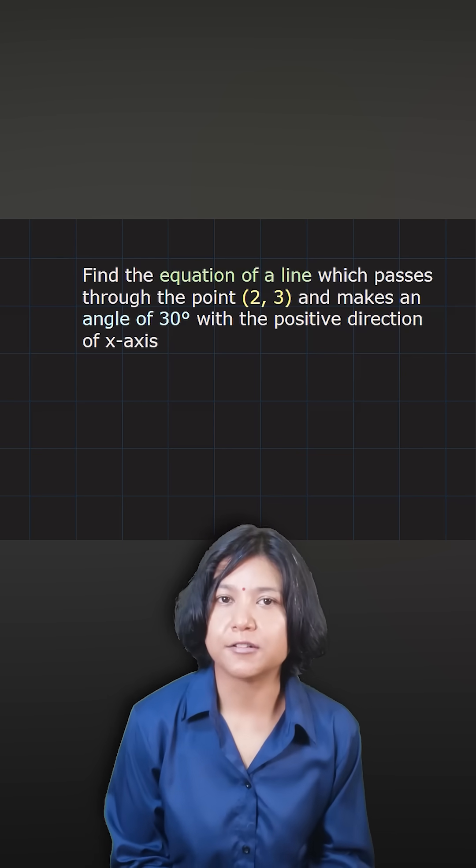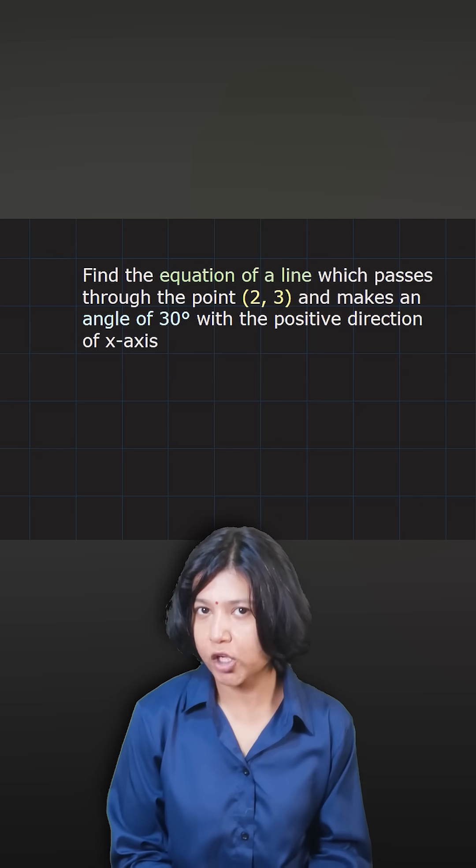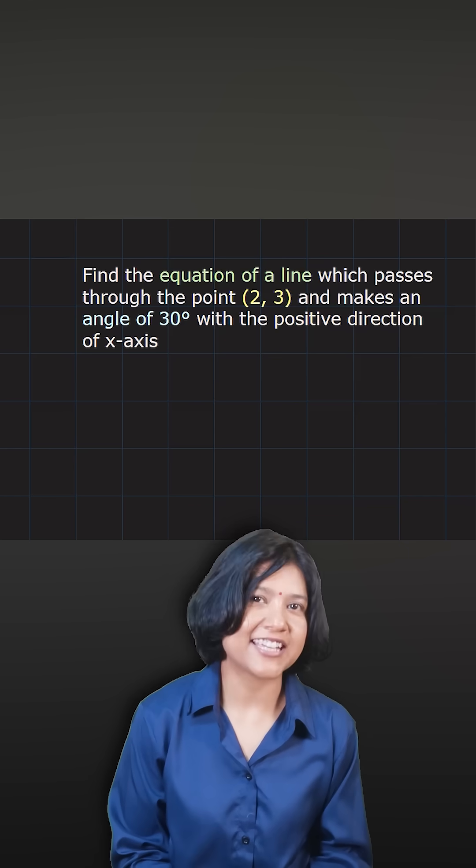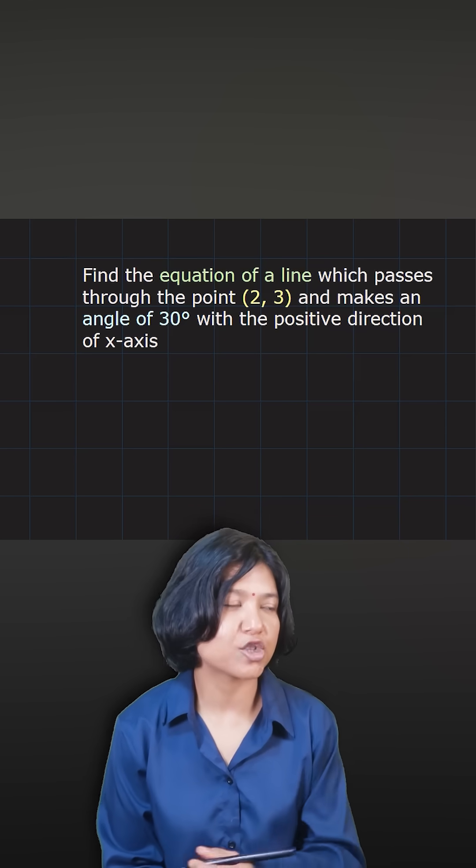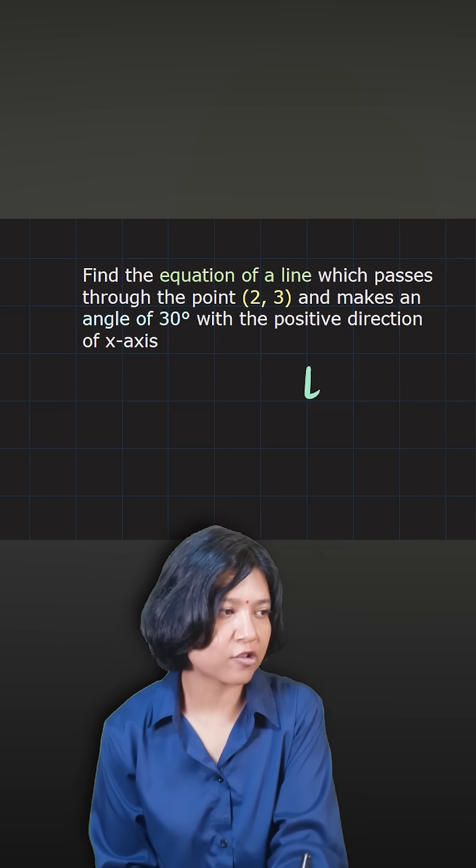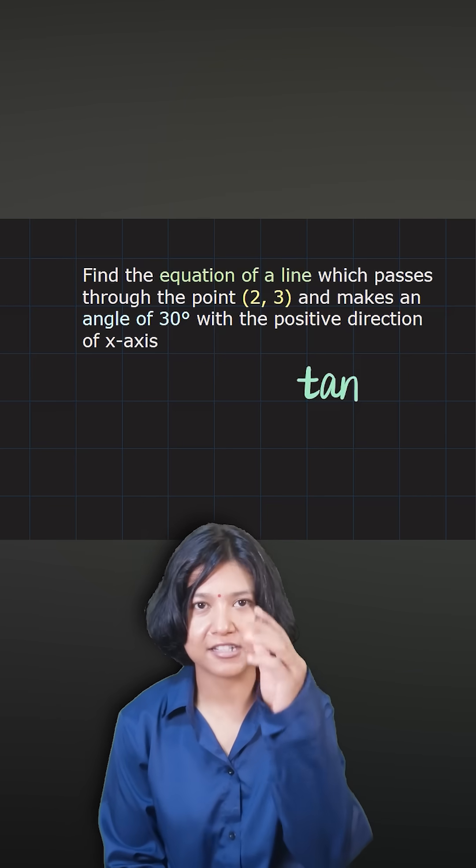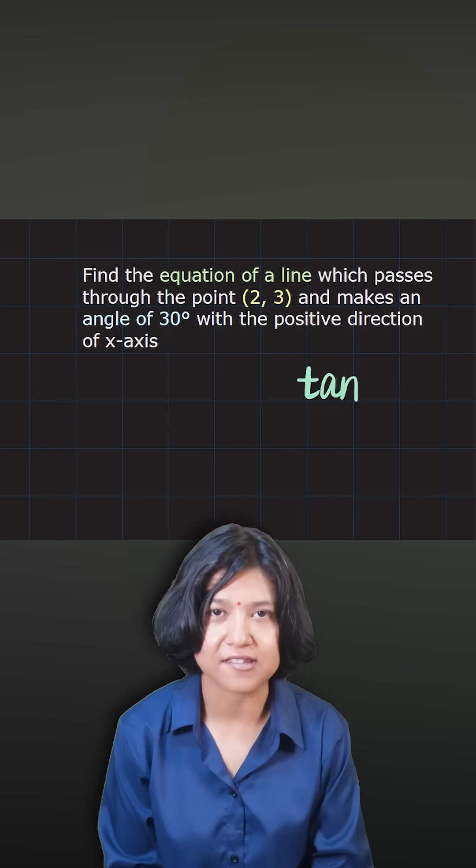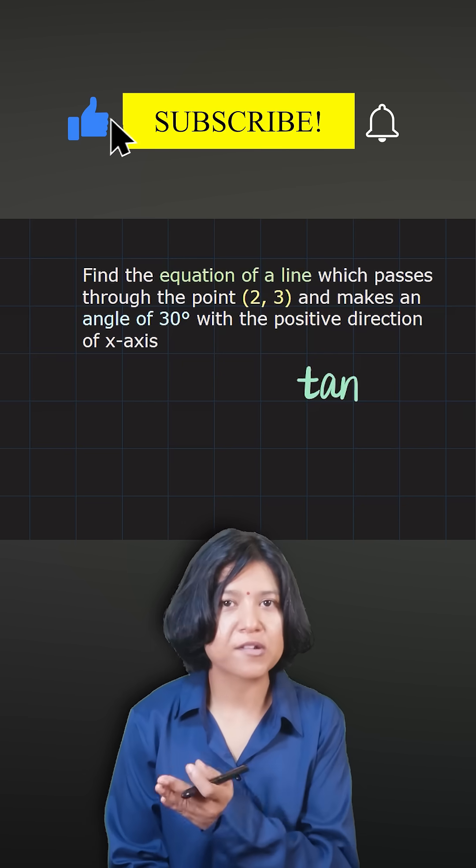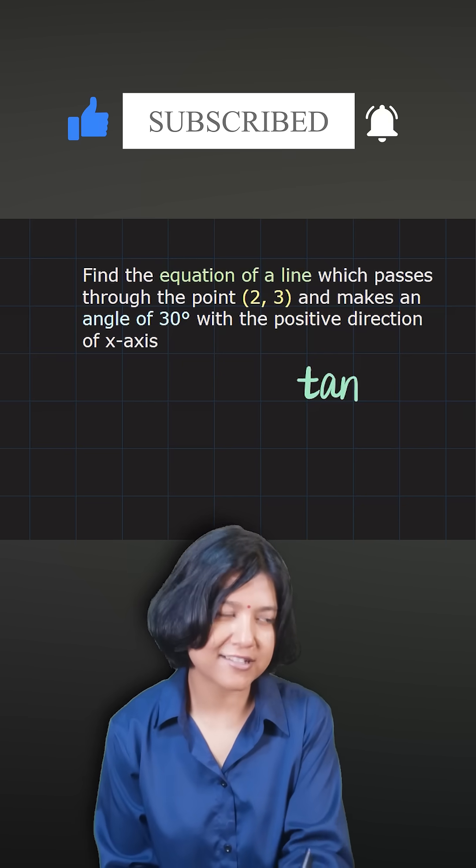When a question talks about making an angle, all you really need to know is that slope can also be found by taking the tan ratio of the angle. Why? Because tan talks about finding the vertical distance upon the horizontal distance. Tan is all about finding the opposite upon adjacent ratio.